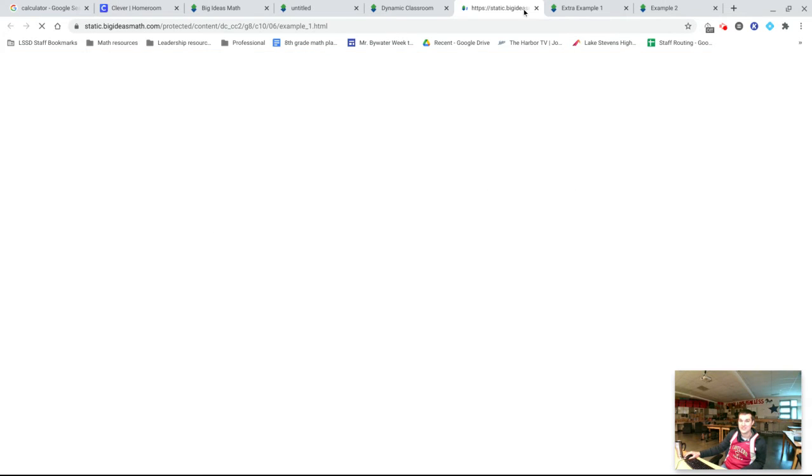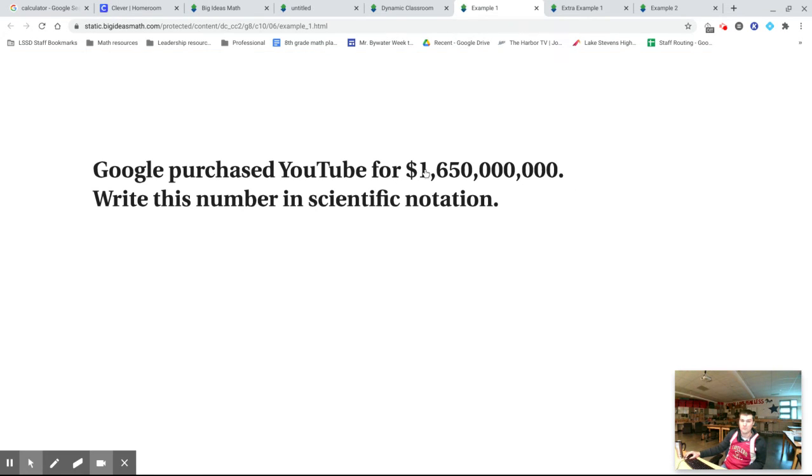So this example here, you can see we have this really big number. YouTube purchase, or Google purchases YouTube. I wonder if this is the accurate amount of money. It's a lot of money. It's a big number.